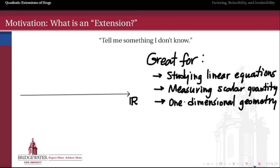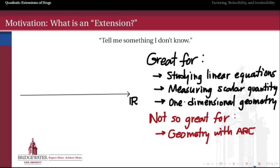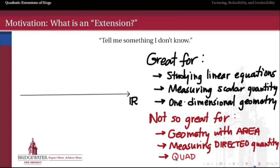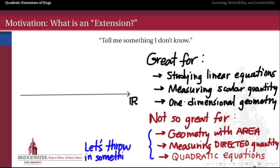The real numbers are great for one-dimensional geometry and measuring lengths, but not for geometry in more than one dimension, directed quantities like velocity vectors, or solving quadratic equations, since not every quadratic equation has a real solution. So if we want to address these limitations, let's think about throwing in something new.